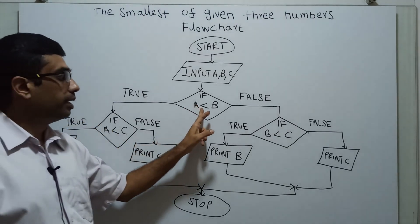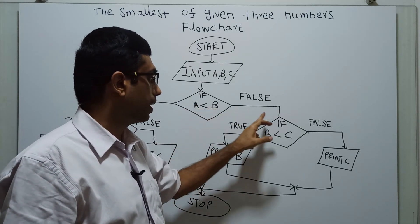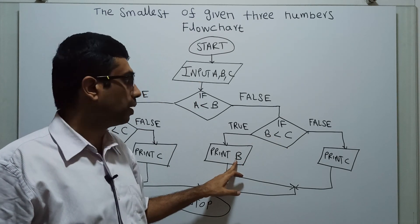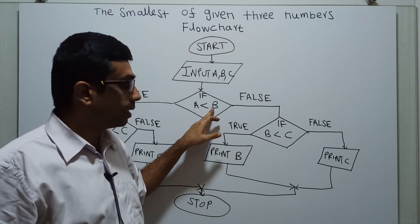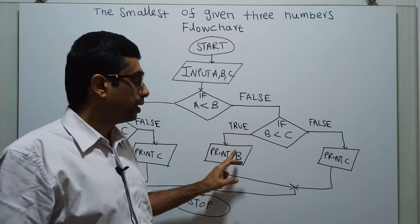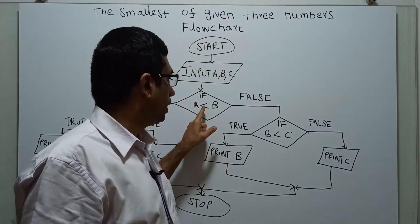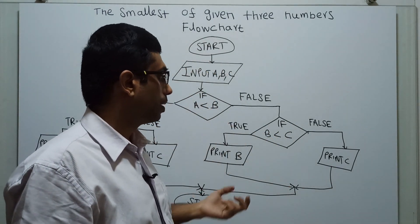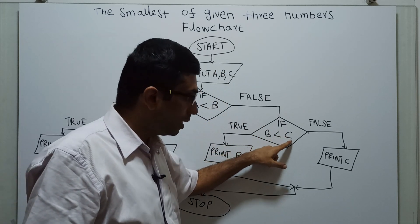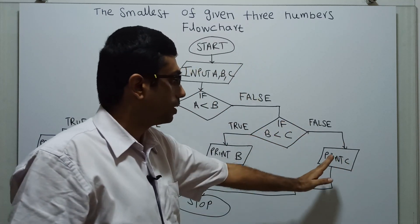If A lesser than B is false, that means B is lesser than A. In this case I am checking B is lesser than C. If it is true, I am printing B — B is the smallest, because B is lesser than A and B is lesser than C. If B lesser than C is also false, I am printing C. A lesser than B is false means B is lesser than A, and B lesser than C is also false means C is lesser than B. So C is lesser than B and B is lesser than A, meaning C is lesser than A also — I am printing C, C is the smallest.